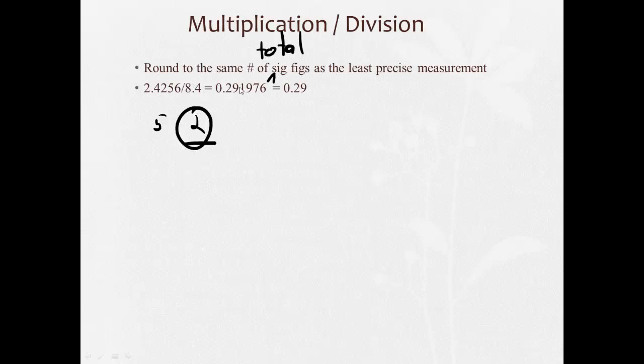we get 0.291976. We're only allowed two significant figures. So using standard rounding rules, that's 0.29.